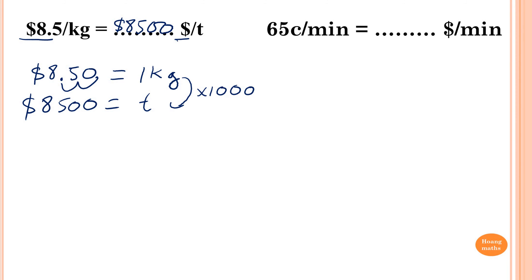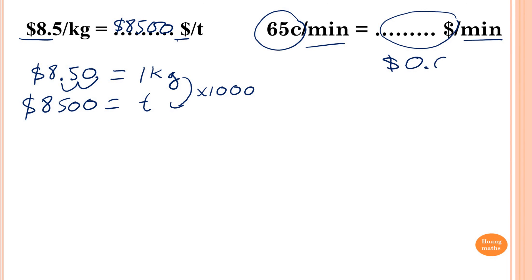Same thing here — same unit. $0.65 per minute: we want to convert to dollars per minute. That's all you need to do. So $0.65 per minute is simply $0.65 per minute — it's the same unit, no conversion needed.